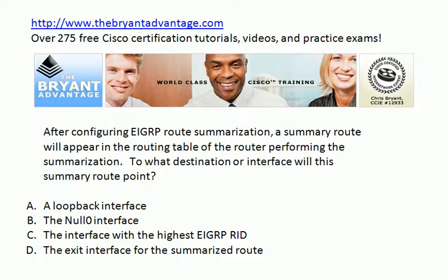Moving to question 2: after you configure EIGRP route summarization, a summary route is going to appear in the routing table of the router that's actually performing the summarization. To what destination or interface will that summary route point? Will it be to a loopback interface, the null zero interface, the interface with the highest EIGRP RID, or the exit interface for the summarized route?